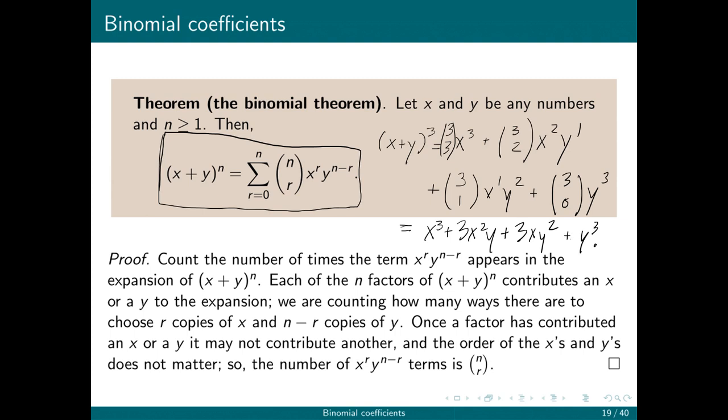Here's a proof. Count the number of times that the term x to the r, y to the n minus r appears in the expansion. Just like I said a minute ago, each of the n factors contributes an x or a y. We are counting how many ways there are to choose r copies of x and n minus r copies of y. So the factors cannot be repeated, right? Once a factor gives us an x or a y, we don't use it again. And the order of the x's and y's don't matter. So we're counting unordered subsets without replacement. So there's exactly n choose r such terms.